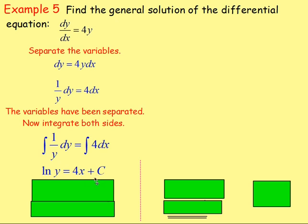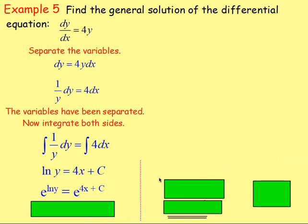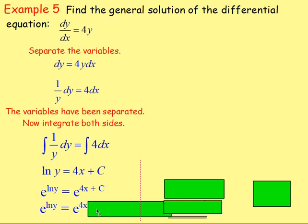We want to get down to y equals. The inverse of ln would be an exponential, so let's take the exponential of both sides. So e to the power of ln y will equal e to the power of 4x plus c. Think about those rules — if you have e to the power of something plus something, you can split that up. That can be written as e to the power of 4x times e to the power of c.